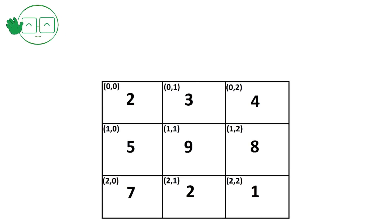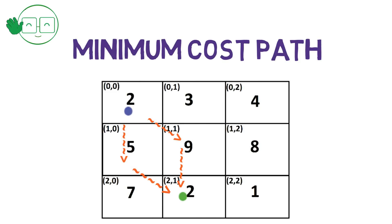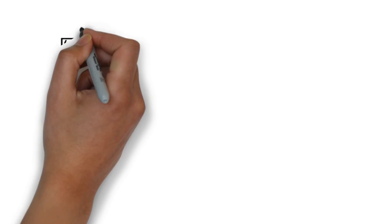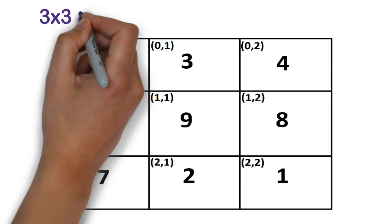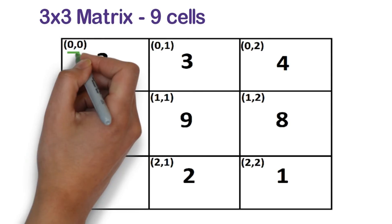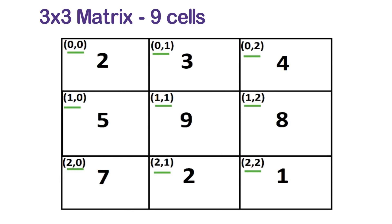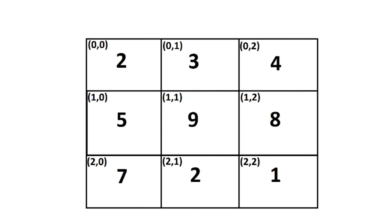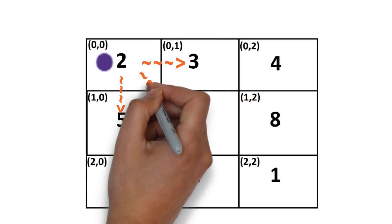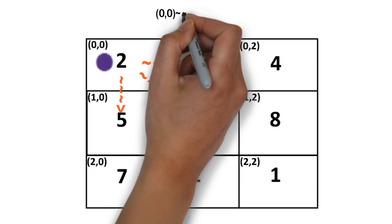In this video we shall look at one of the popular programming interview questions: finding the minimum cost path. We are given a matrix of numbers — in this example a 3×3 matrix with 9 cells. Each cell has an index; for example, cell 0,0 has value 2 and cell 2,2 has value 1. The rule is that we can move from one cell to another only in the right, down, or diagonally down-right directions.